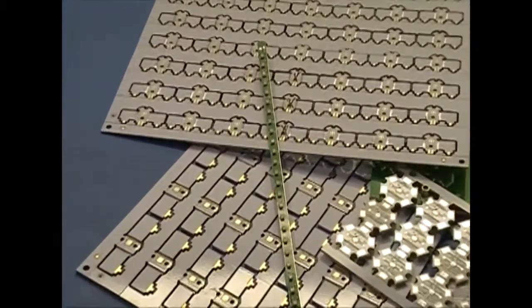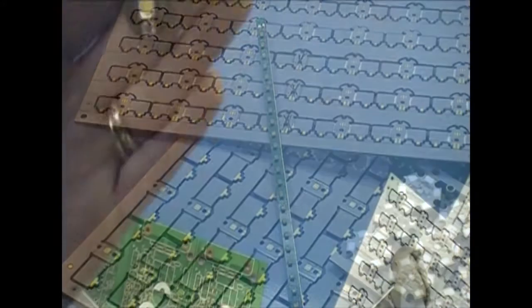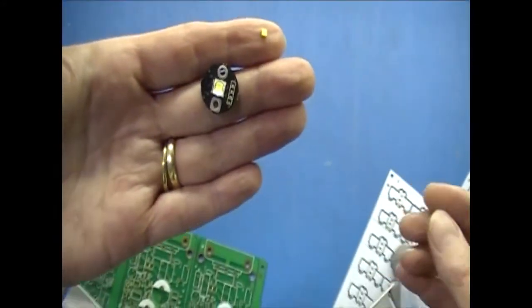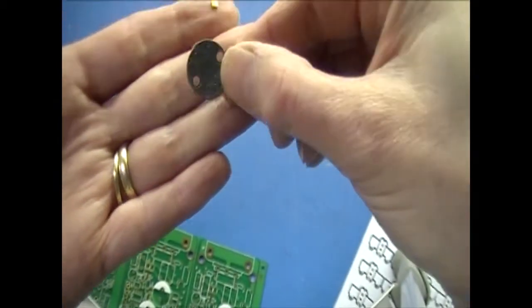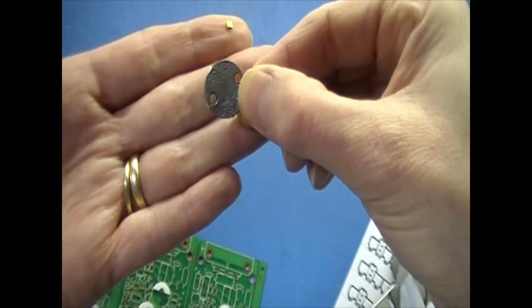So why metal clad boards? Electronic components generate heat and you need to dissipate that heat away from the component to avoid accelerated failure. But FR4 does not conduct heat very well. For smaller components, a sea of vias or a thermal land pad can be sufficient to dissipate the heat.